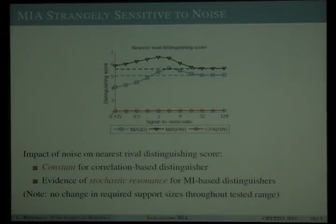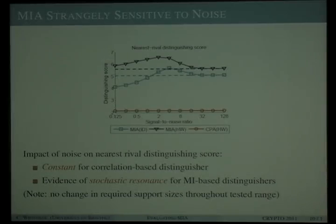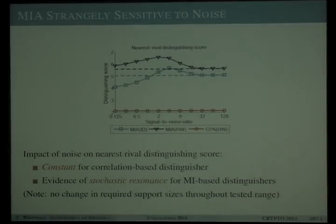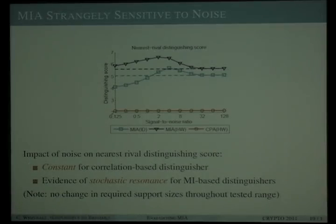Looking at what happens in the presence of independent Gaussian noise: the correlation coefficient is scaled by a constant depending only on the magnitude of the noise, so the distinguishing score itself remains constant. By contrast, MIA scores have a surprising non-monotone relationship with noise — the distinguishing power seems to be enhanced by noise at some levels. This type of sensitivity, in which noise in the system can actually enhance signal in the DPA vector, is called stochastic resonance, and can in principle occur in any non-linear measurement system.